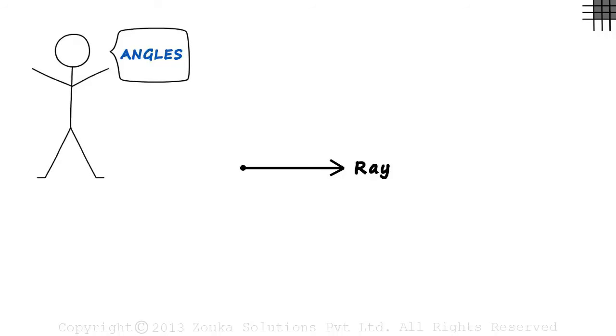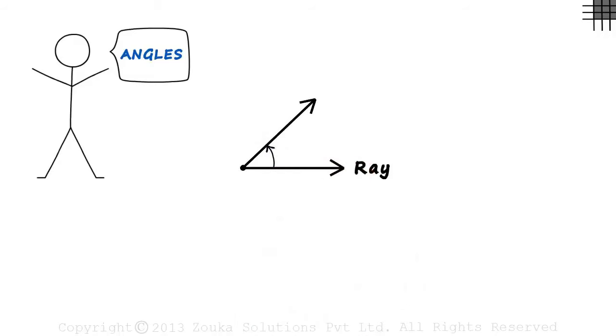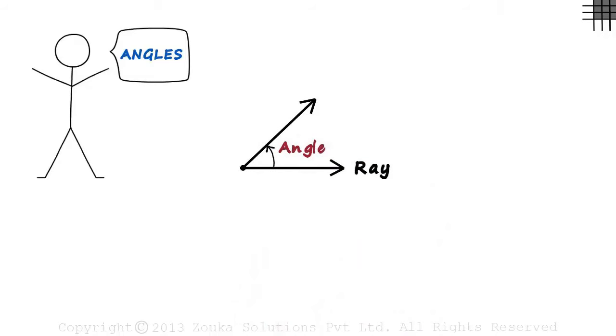This is one ray. And if we have another ray like this, then what we have between them is called an angle. Note that the two rays originate from a single point. So an angle can be defined as some measure between two rays.